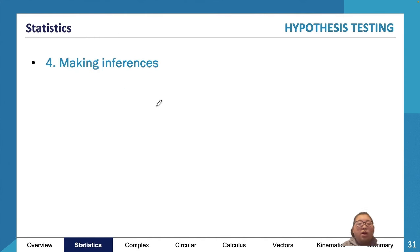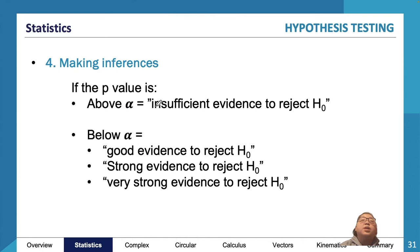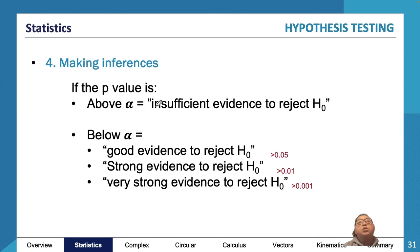Making inferences: if p > α, there is insufficient evidence to reject H₀. If p < α, there is good to very strong evidence to reject H₀. The cutoffs are: p < 0.05 is good evidence, p < 0.01 is strong evidence, and p < 0.001 is very strong evidence. These thresholds may appear in your SACs.